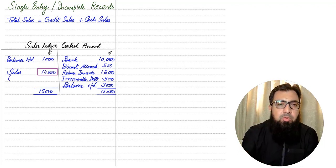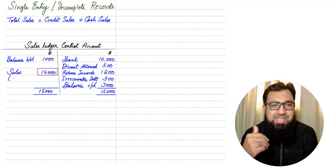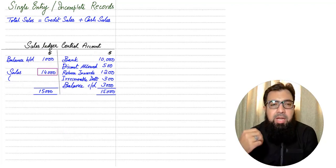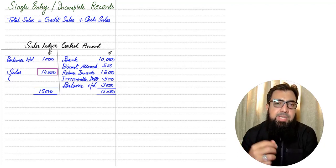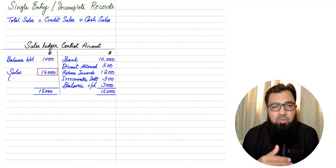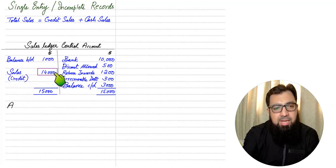Now the question arises: is this total sales, credit sales, or cash sales? It is only credit sales. Why? Because in a debtors account only credit sales appear — if we sell goods for cash or by cheque that never comes into the debtors account. The entry for cash sales would be cash or bank debited and sales account credited. The debtor is only raised when we sell goods on credit. So the credit sales we have calculated is 14,000.